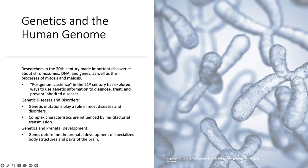Beginning with genetics and the human genome, researchers in the 20th century made important discoveries about chromosomes, DNA, and genes, as well as the processes of mitosis and meiosis. Post-genetic science in the 21st century has explored these discoveries and ways to use genetic information to diagnose, treat, and prevent inherited diseases. Genetic mutations play a role in most diseases and disorders, and complex characteristics are influenced by multifactorial transmission. Genes determine the prenatal development of specialized body structures and parts of the brain, and the more advanced genome sequencing becomes, the more we will be able to catch genetic anomalies more quickly.